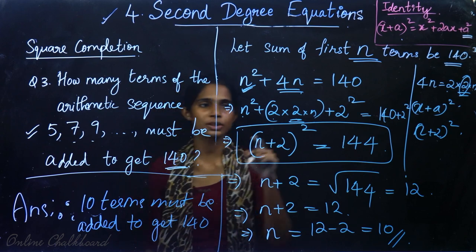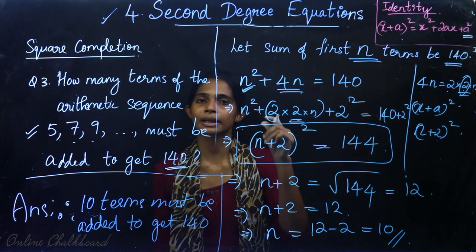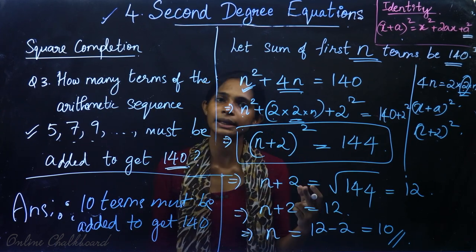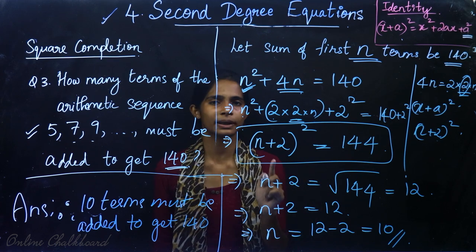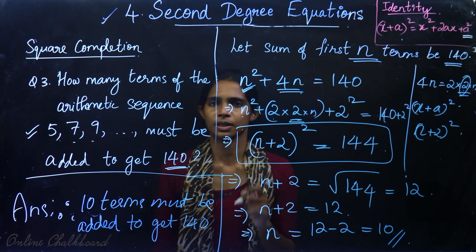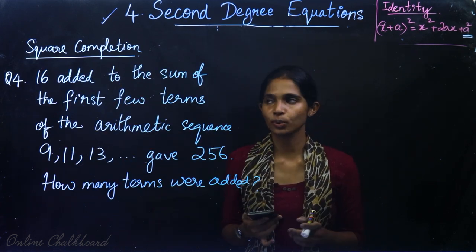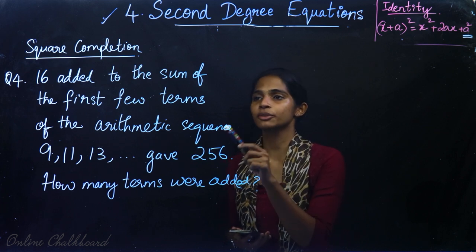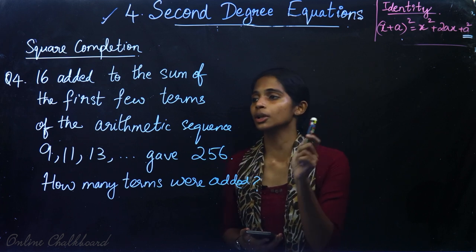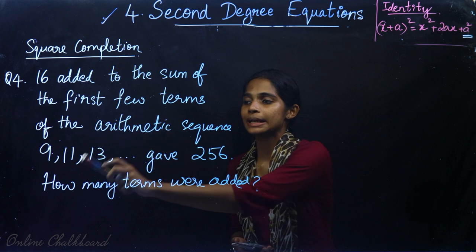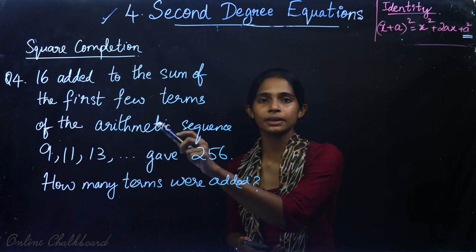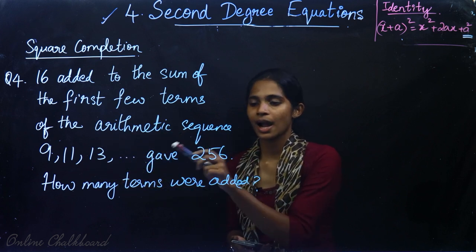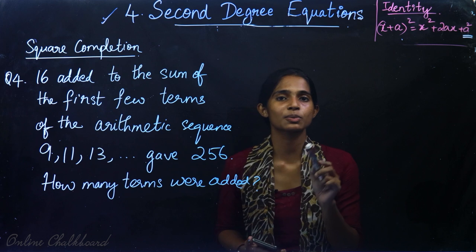I hope question 3 is clear to you all. Now we will do question number 4: 16 added to the sum of the first few terms of the arithmetic sequence 9, 11, 13 gave 256. How many terms were added?